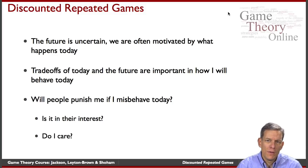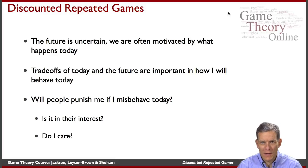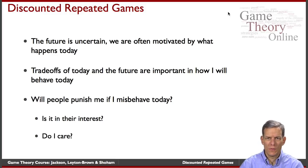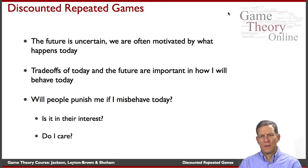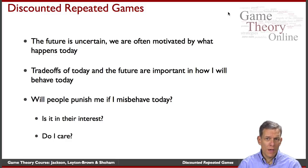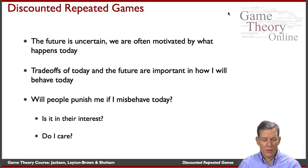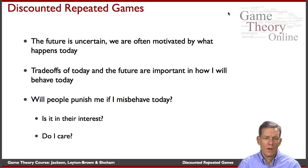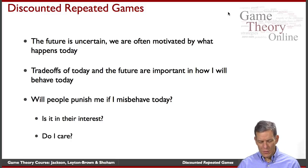If I misbehave today, I have to think about how people are going to react to that. If we're trying to support cooperative behavior in a prisoner's dilemma, I can behave today or I can cheat and defect. If I do that, I'm going to get a temporary gain, and then possibly be punished in the future. The important questions are: will people want to punish me? Is it in their interest? How much do I care? What's my discount factor — do I care a lot about the future or just a little bit?